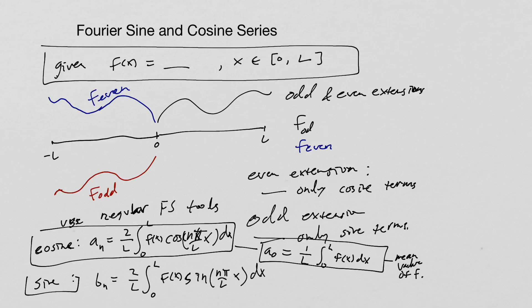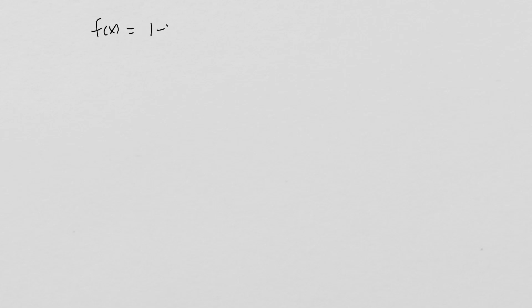Those are the three formulas we need for Fourier series. Let's do a couple of examples. We're going to do the function f(x) = 1 - x on the interval x from 0 to 1, so L equals 1.